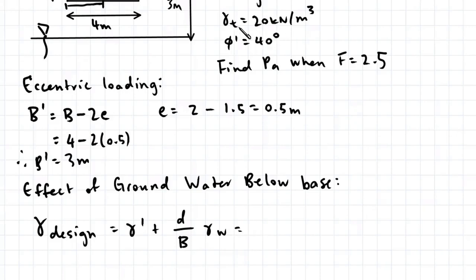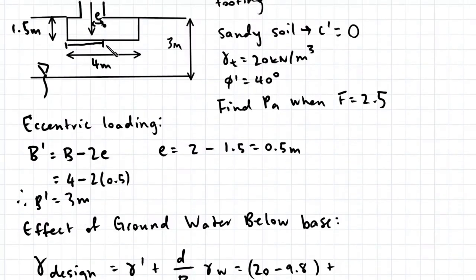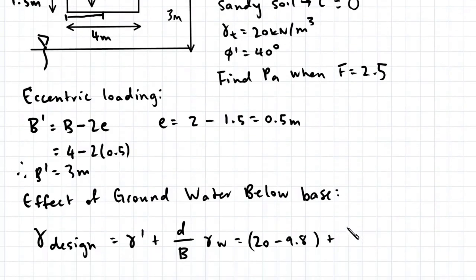So unit weight is 20, our total unit weight. So 20 minus 9.8 plus, so d, d is just this distance here. So that's 3 minus 1.5, 1.5 divided by our width.